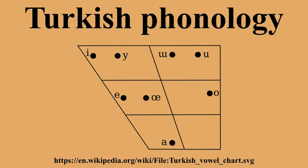Syllable-initial P, T, C, K are usually aspirated. T and D are affricates, not plosives; they have nevertheless been placed in the table in that manner to save space. Final G may be fronted to a voiceless velar fricative. It may be fronted even further after front vowels, then tending towards a voiceless palatal fricative.